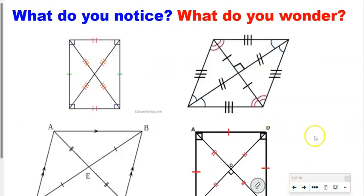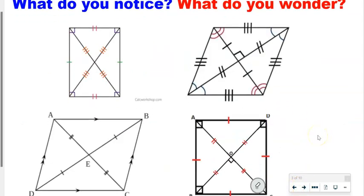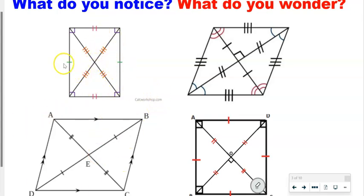What do you notice? I notice that this looks like a rectangle, this looks like a square. We're going to talk about that other shape as well. I also notice that this has got these marks on the sides that are different — we call these tick marks. And then we call these arcs, which speak of angles.